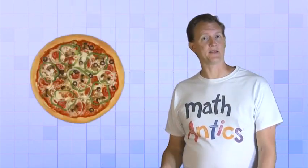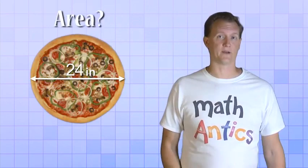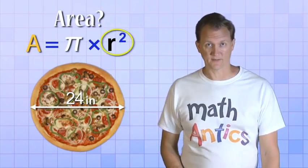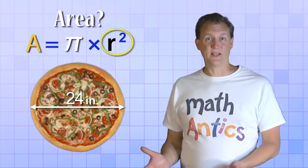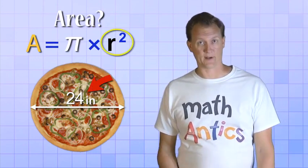Here's another real-world example with a circle. If this pizza has a diameter of 24 inches, what's its total area? Well, using our formula, we start by squaring the radius. But the problem didn't give us a radius, it gave us the diameter. So we have to calculate the radius from the diameter.